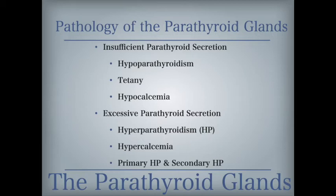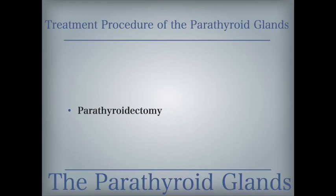Primary hyperparathyroidism is caused by a diseased parathyroid gland. Secondary hyperparathyroidism is caused by a problem elsewhere in the body — for example, kidney failure makes the body resistant to the action of PTH. A parathyroidectomy is the surgical removal of one or more of the parathyroid glands, performed to control hyperparathyroidism.